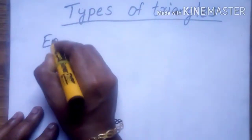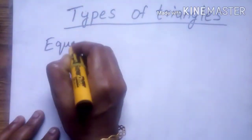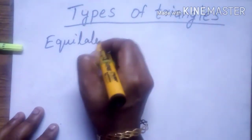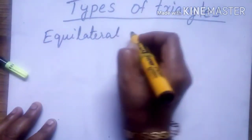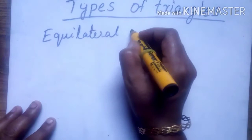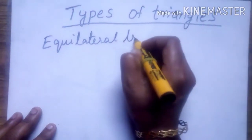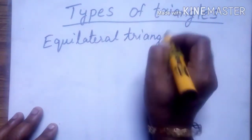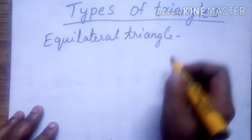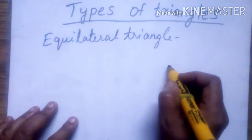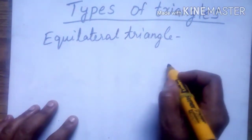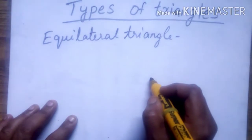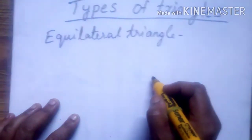First is equilateral triangle. A triangle which has all sides of equal length is called an equilateral triangle.